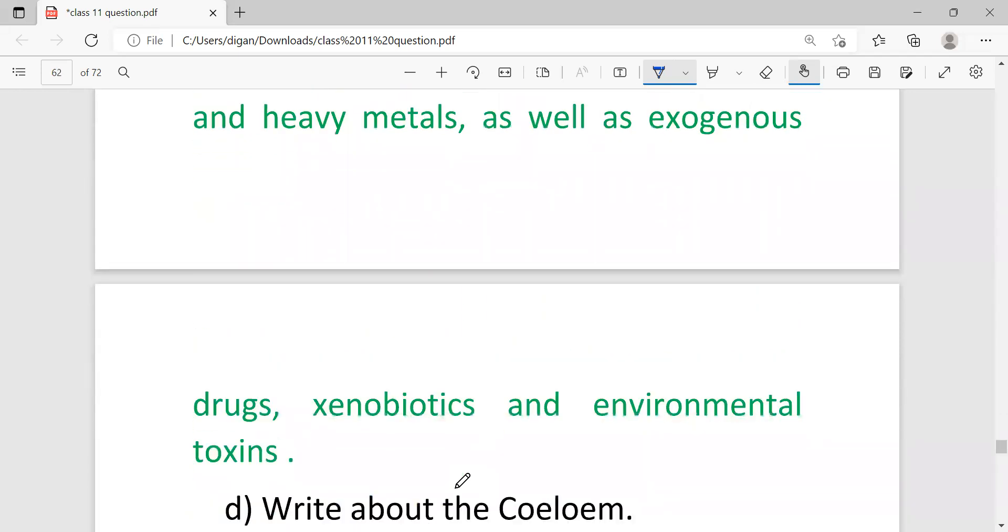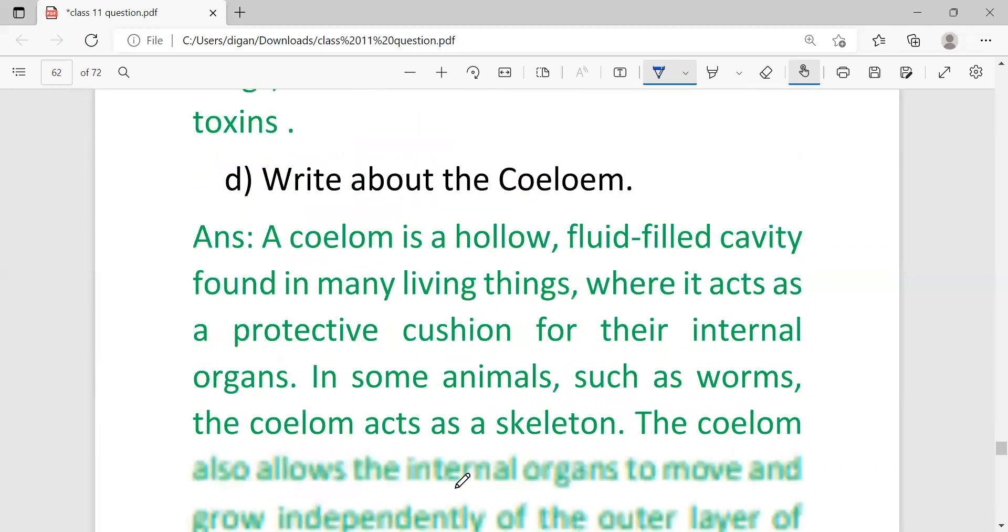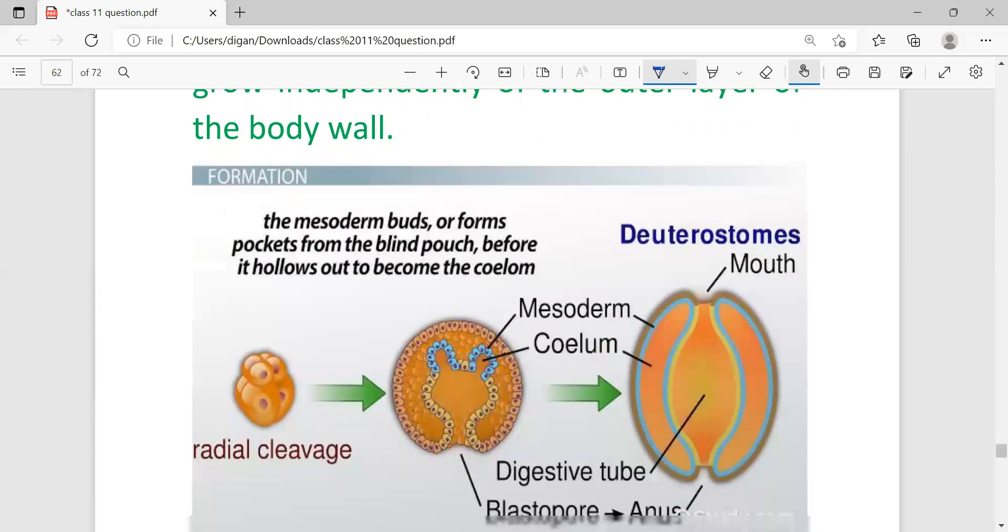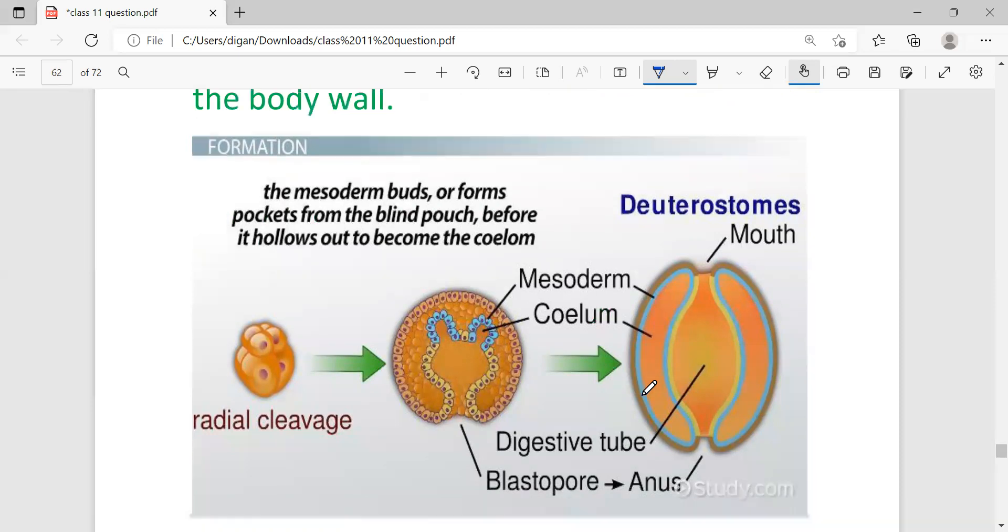Write about the coelom. A coelom is a hollow fluid-filled cavity found in many living things where it acts as a protective cushion for their internal organs. In some animals such as worms, the coelom acts as a skeleton. The coelom also allows the internal organs to move and grow independently of the outer layer of the body wall. This is the diagram of coelom: suppose this is the digestive tract and this is the mesoderm, the outer layer. In between, this space is known as coelom. No need to draw the diagram; I'm showing it just so you can easily understand.